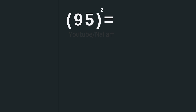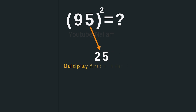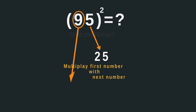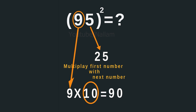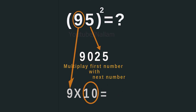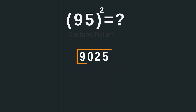Finally, 95. Multiply the last digits: 5 times 5 equals 25. Then multiply the first digit, which is 9, with its next digit, which is 10. So 9 times 10 equals 90. Now join these results together, 25 and 90, to get your final answer, which is 9025.